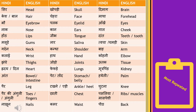The first word is 'sir', which means head. 'Khopdi' matlab skull. 'Dimaag' means brain. 'Keish' ya 'bal' ko bolenge hair. Okay.